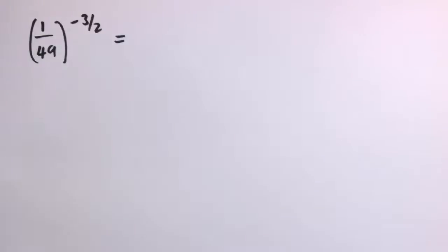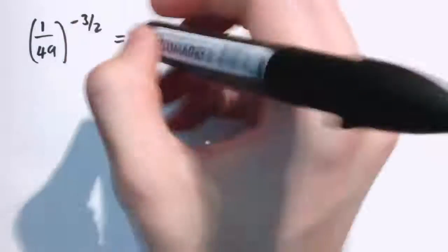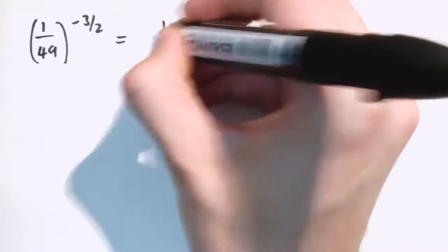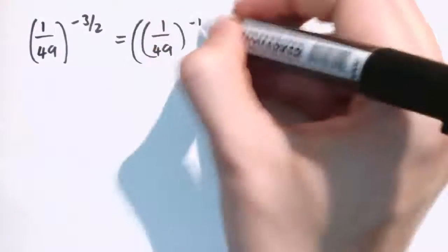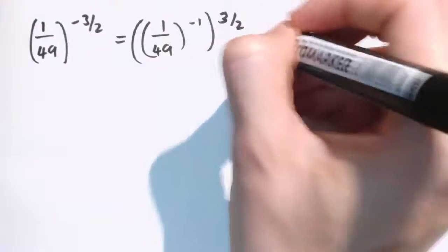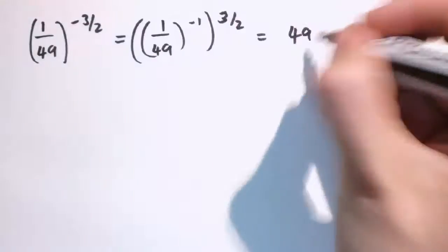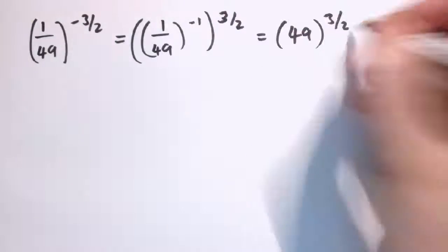Here we've got 1/49 to the minus 3 over 2, and you know we can do these in any order, but we'll try and pick an order to make it as easy as possible. So this time actually I'll do the minus bit first, so actually you might just think of this as 1/49 to the minus 1, or to the 3 over 2, because 1/49 to the minus 1 just means the reciprocal of that, so that's just 49 then to the 3 over 2.